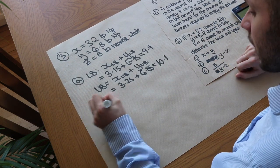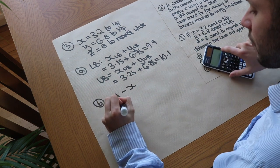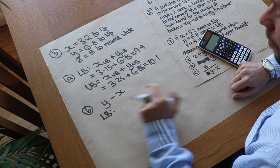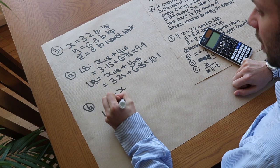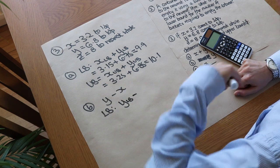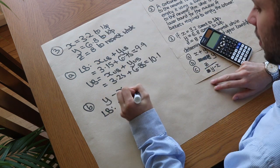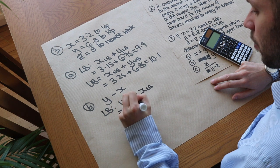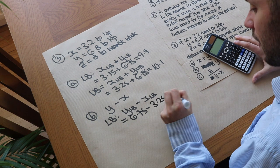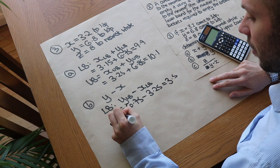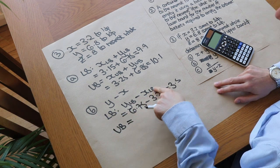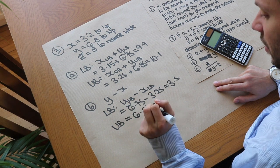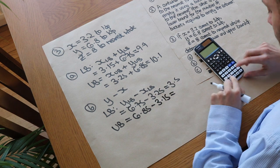For y minus x: to get the lower bound using subtraction, start with the smallest possible y and subtract the biggest possible x, since subtracting a bigger number leaves the smallest amount. That's the lower bound of y minus the upper bound of x: 6.75 minus 3.25, giving 3.5. For the upper bound, start with the greatest possible y and subtract the smallest possible x: 6.85 minus 3.15, giving 3.7.